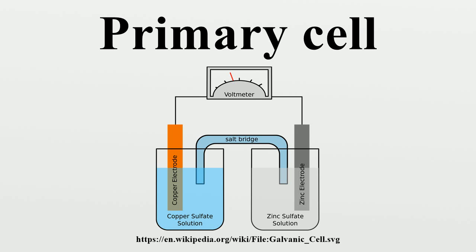In contrast, in a secondary cell, the reaction can be reversed by running a current into the cell with a battery charger to recharge it, regenerating the chemical reactants.